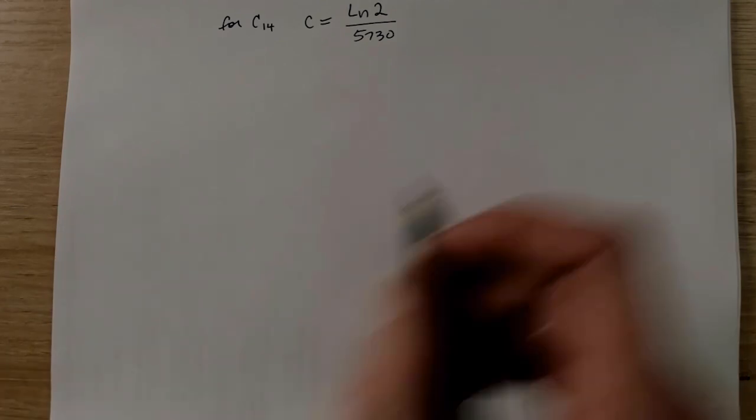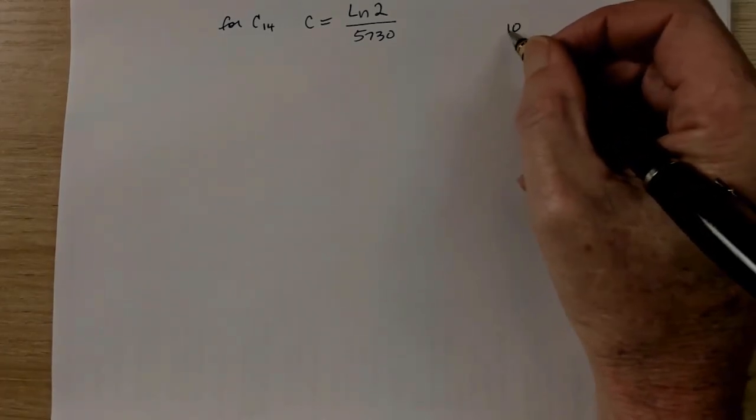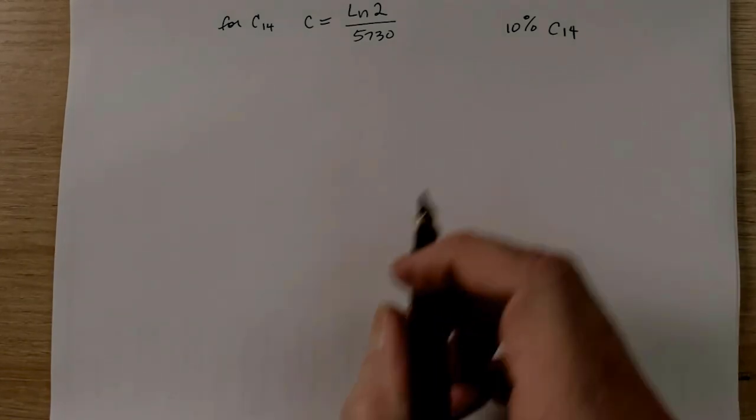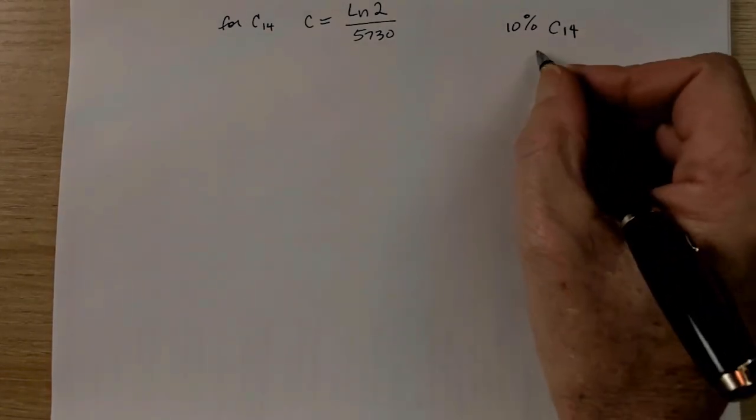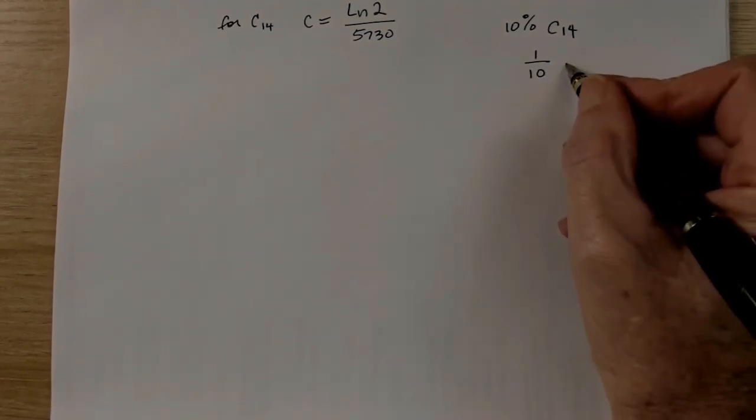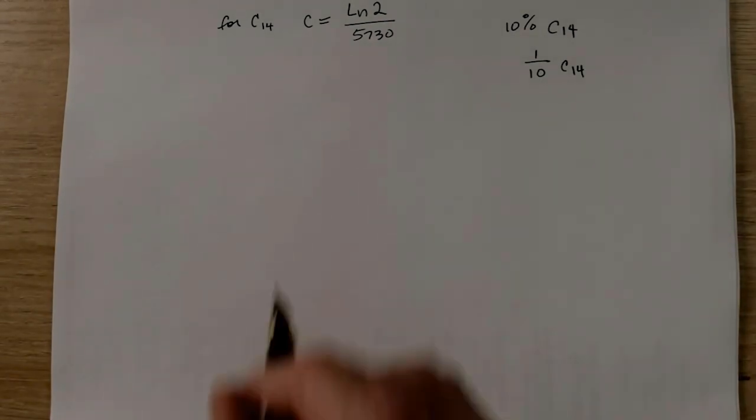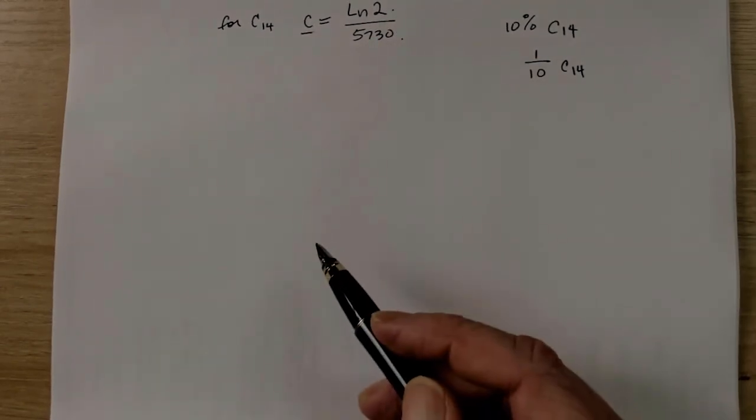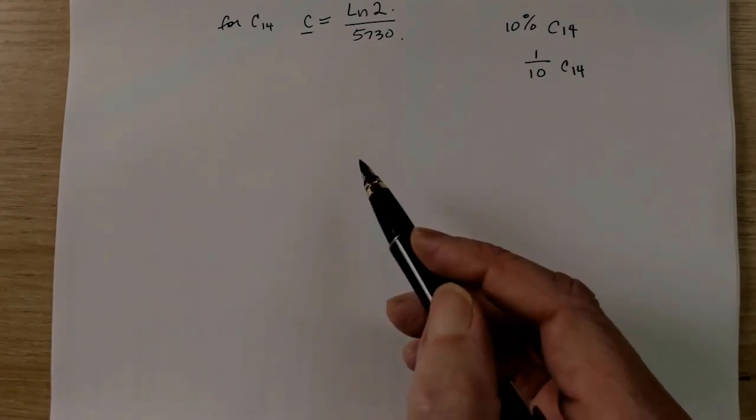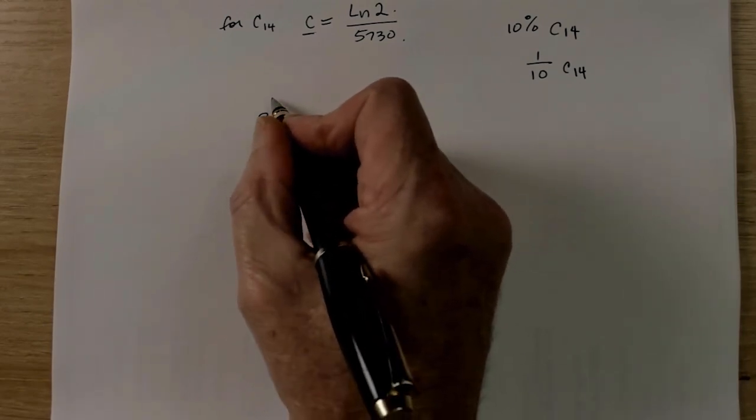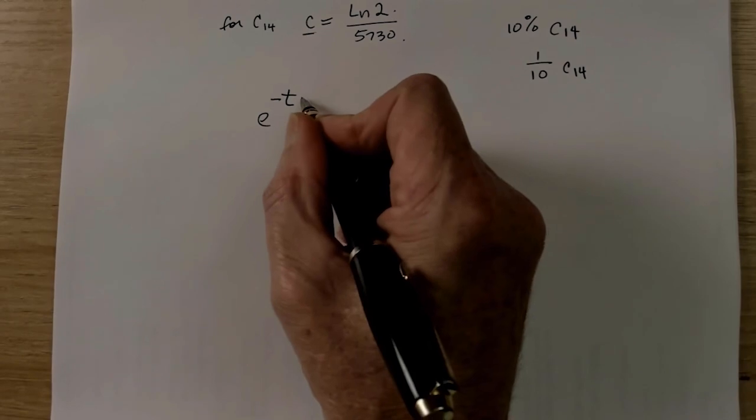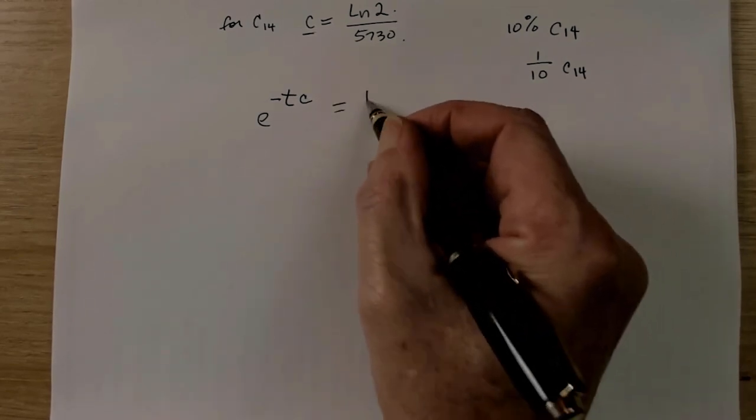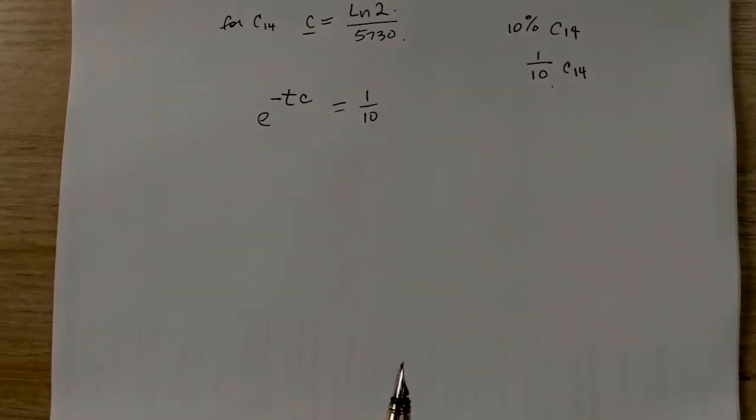Okay, we're going to go ahead and do a quick problem here just to show. Say that we have a sample that has 10% of the original C14 in it. And we want to know how old that is. So we're going to convert this around a little bit. We're going to say it has one-tenth of the original C14. That'll make things a little bit easier here in a moment. So for carbon-14, our constant is the natural log of 2 over 5,730, which is the half-life of carbon-14.